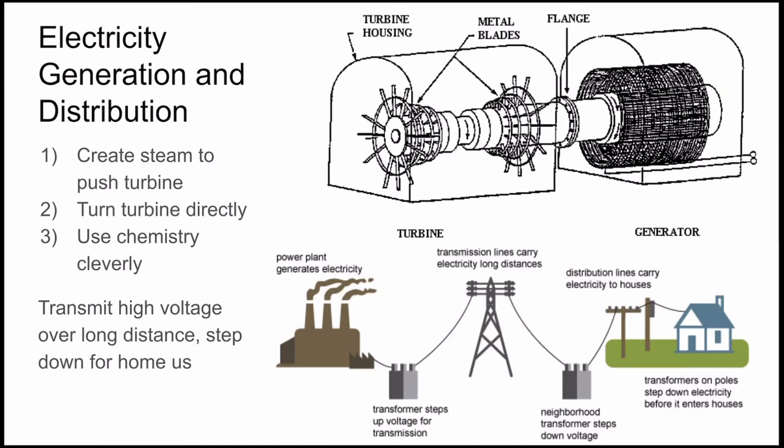Once electricity has been generated, it must be transported to where it's demanded. This is done using electrical poles spanned by aluminum or copper wires. Unfortunately, some electrical energy is lost due to heat over long distances. To make this more efficient, it is transported at high voltage. Then, closer to your house, the voltage is stepped down to 220 volts, so that your household circuits don't fry.